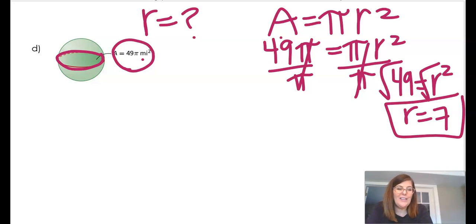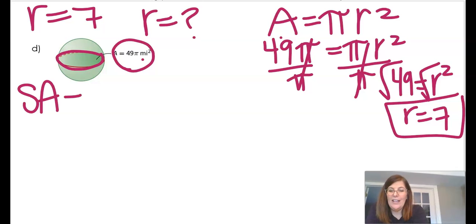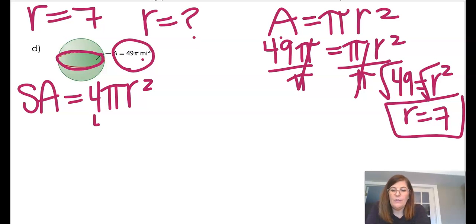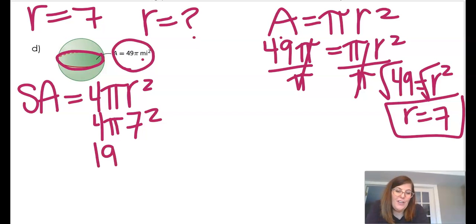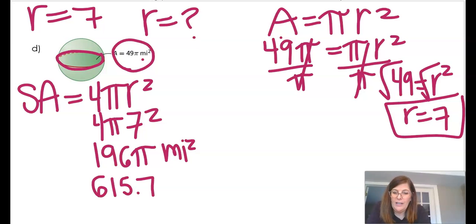Now that I know the radius is 7, I can find the surface area. Surface area equals 4 pi r squared, so 4 pi times 7 squared, which is 196 pi miles squared. Using 3.14159 or the pi button, the rounded answer is 615.75 miles squared.